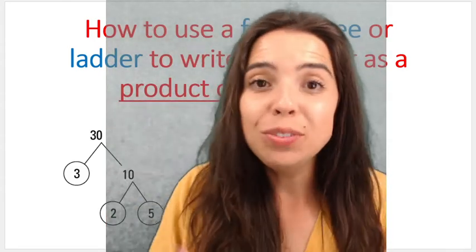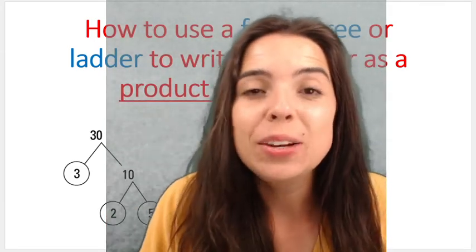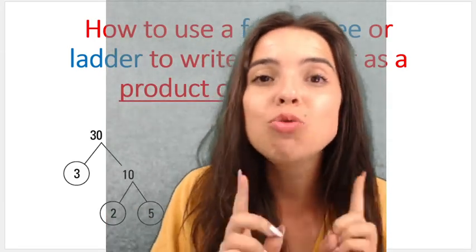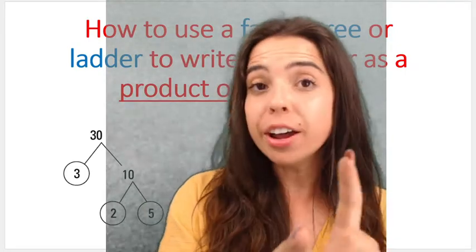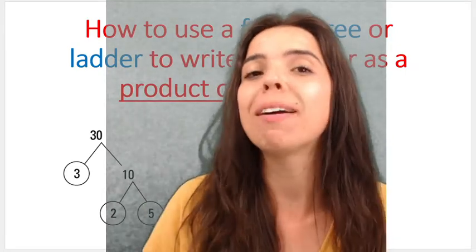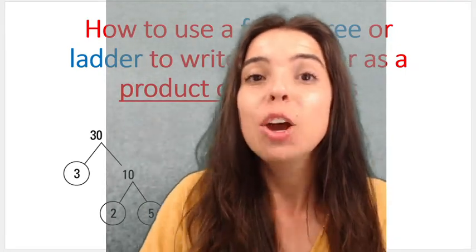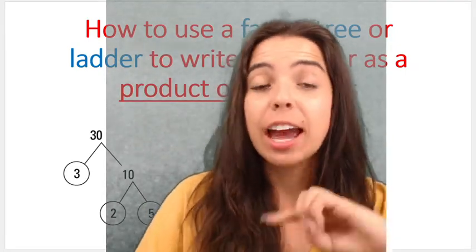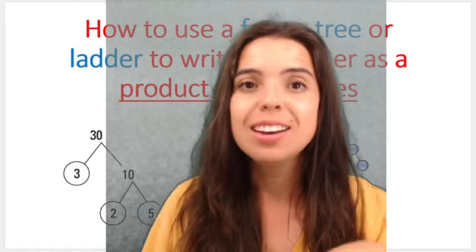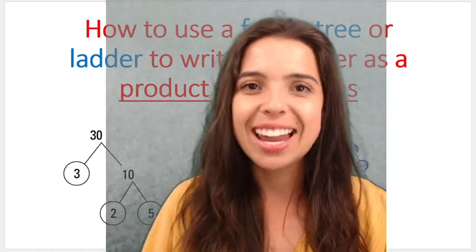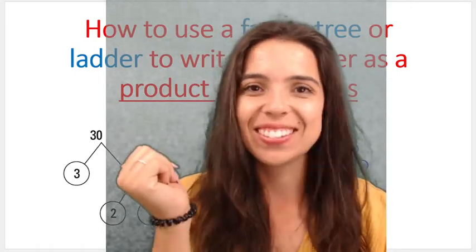Hello everybody. In this video we're going to be looking at how to write a number as a product of its prime factors. We're going to be looking at two methods: the factor tree and the factor ladder. Let's go.